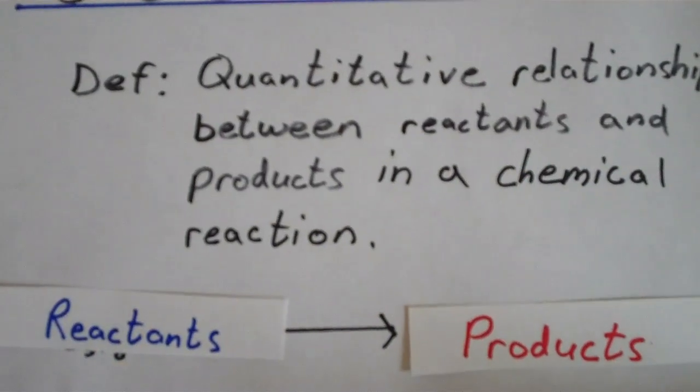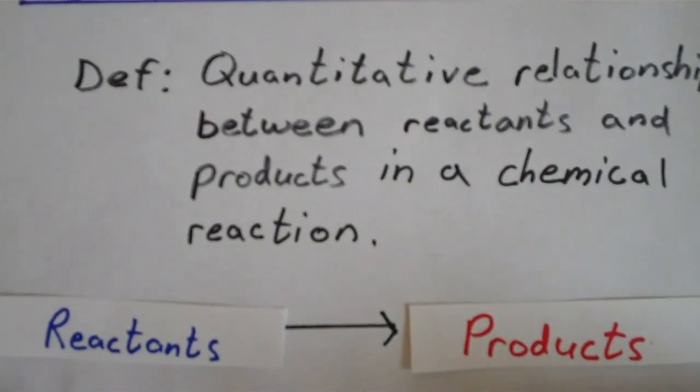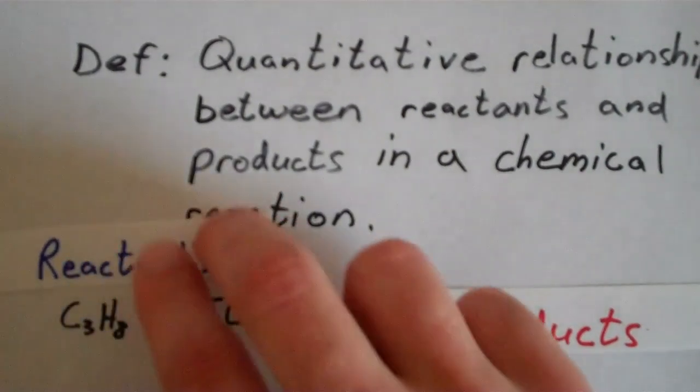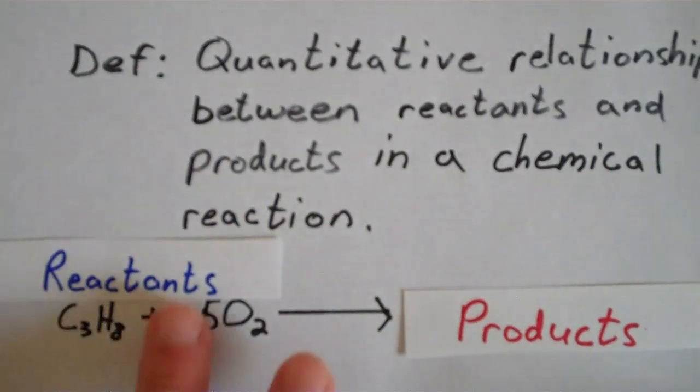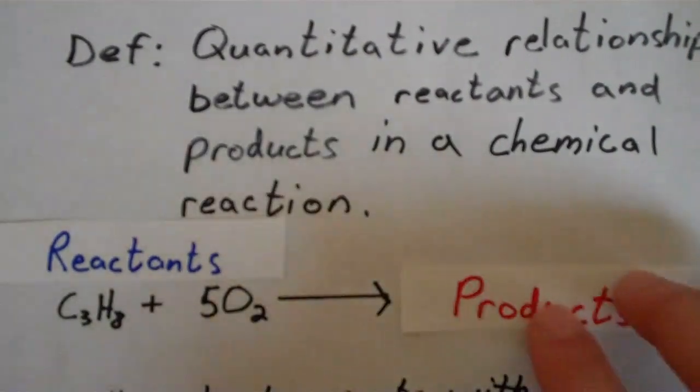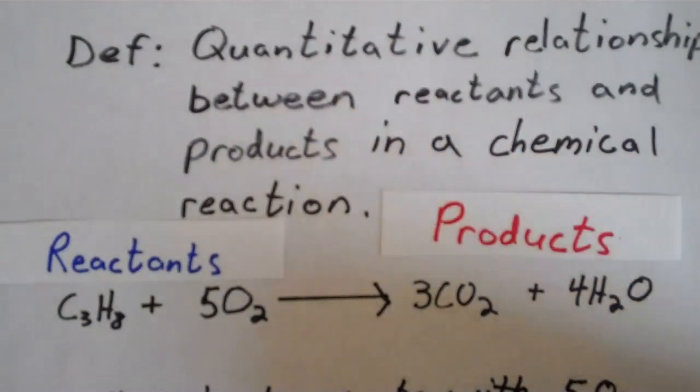So I've chosen a random reaction to sort of define some terms here. And the reaction that I've chosen is the combustion of propane in which my reactants are C3H8, which is propane, and 5 O2, and my products are 3 CO2 molecules and 4 H2O molecules.